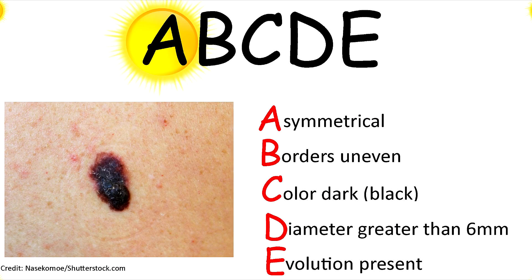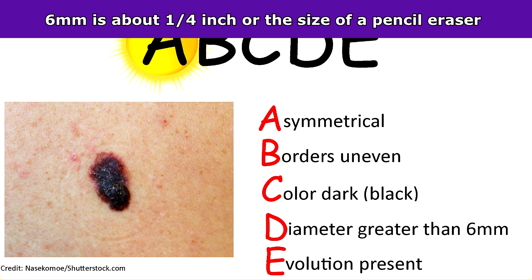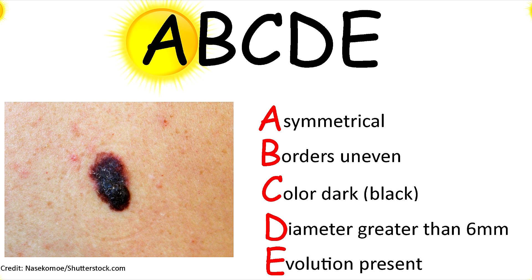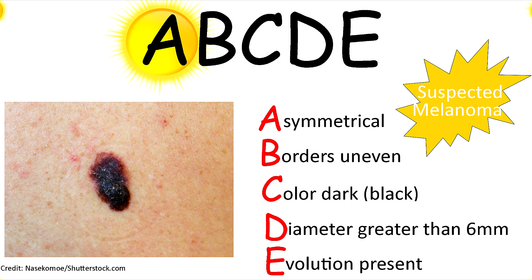Then we would look at the diameter, and anything greater than six millimeters is concerning. This one is definitely greater than six millimeters. Then we would look at the evolution — has it been evolving in its shape, size, or color? You would want to ask the patient about this. If it has, this means we are suspicious that this may be melanoma and the patient would need a skin biopsy.